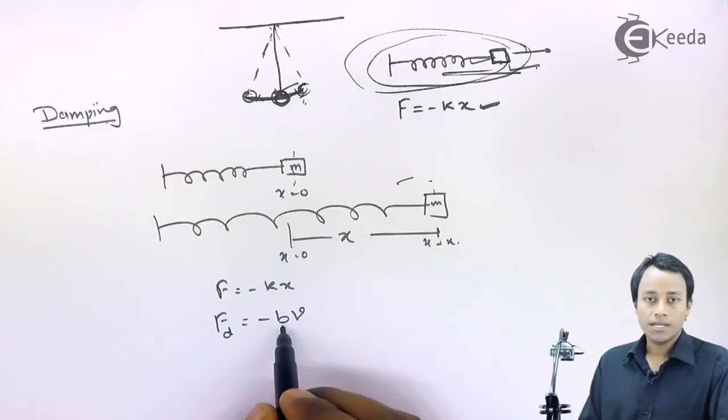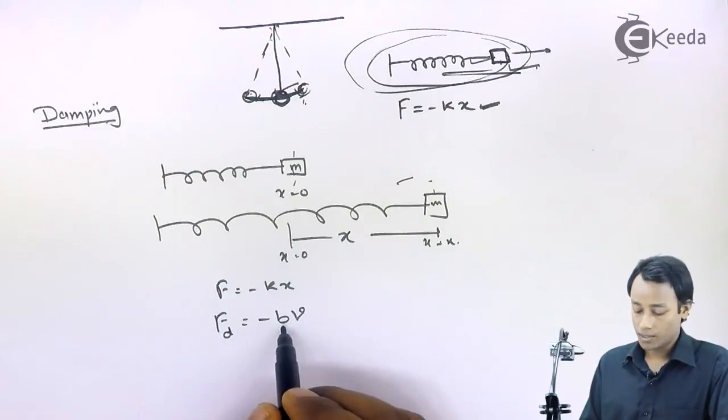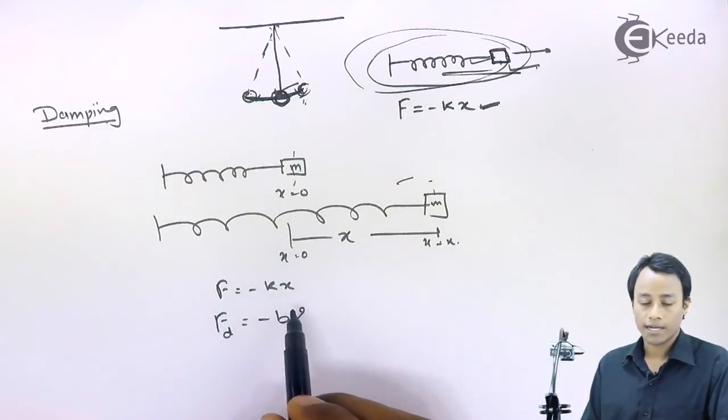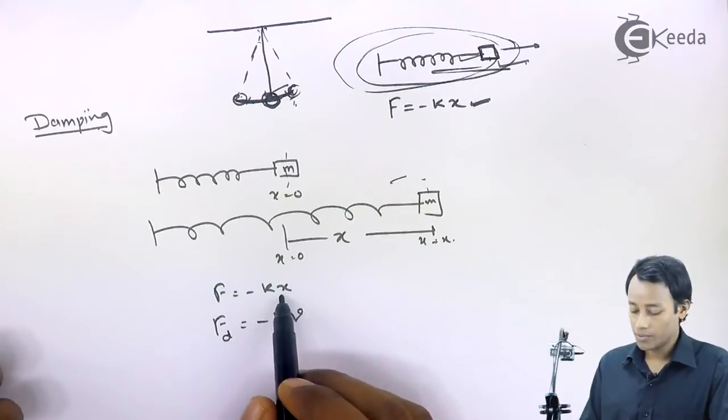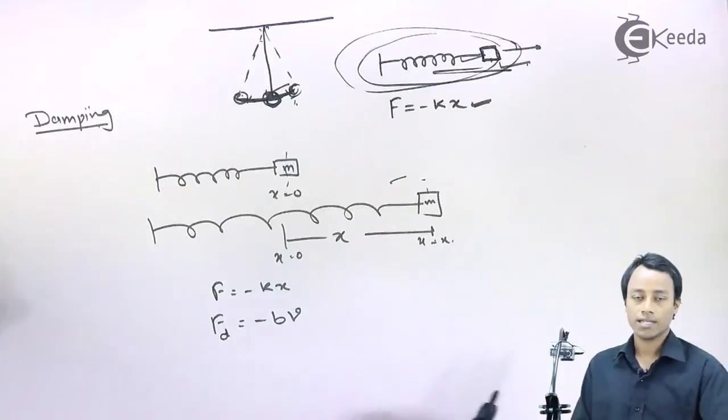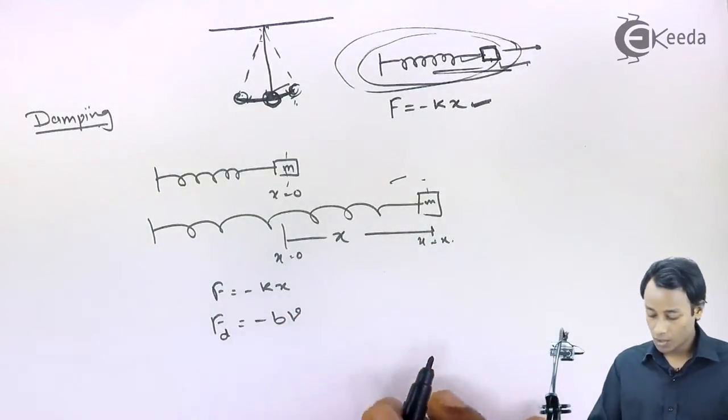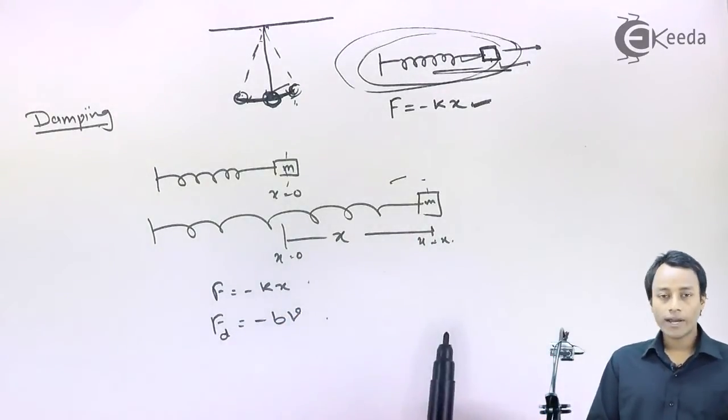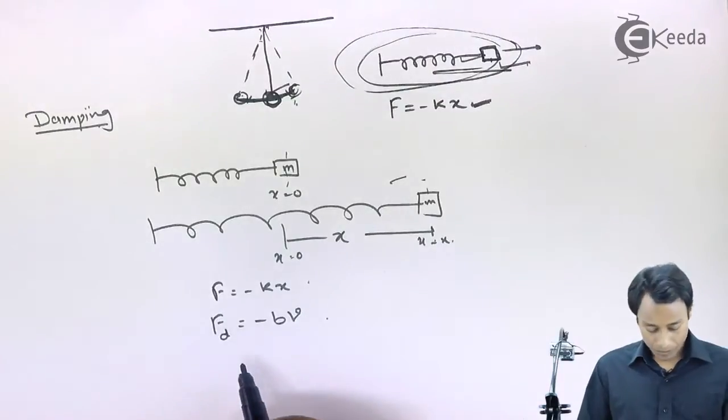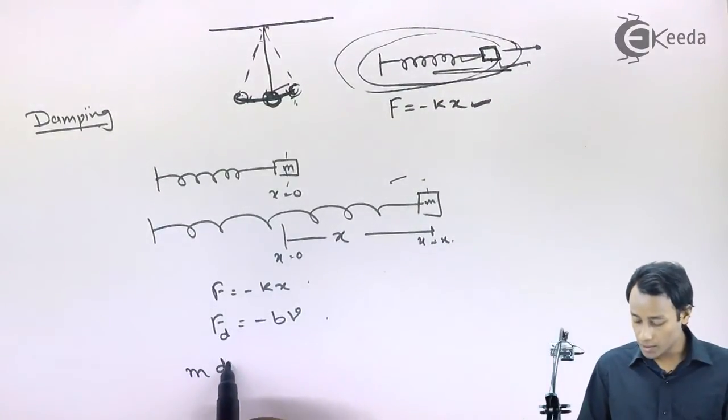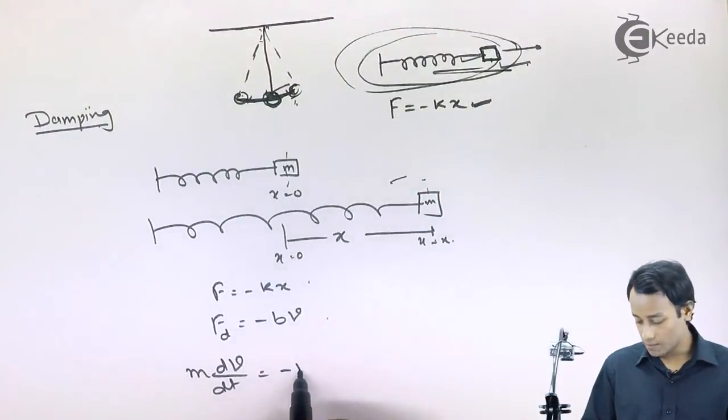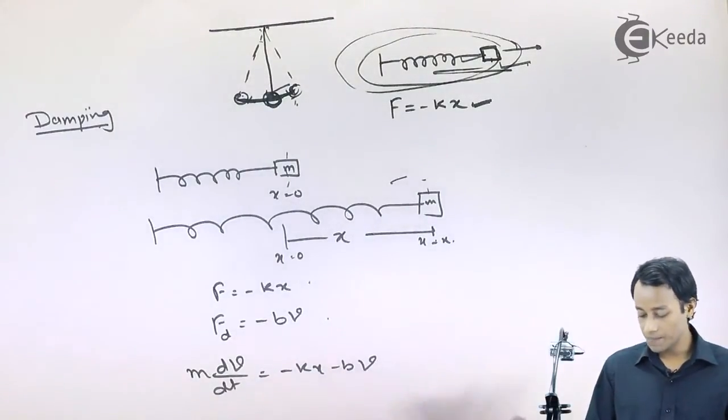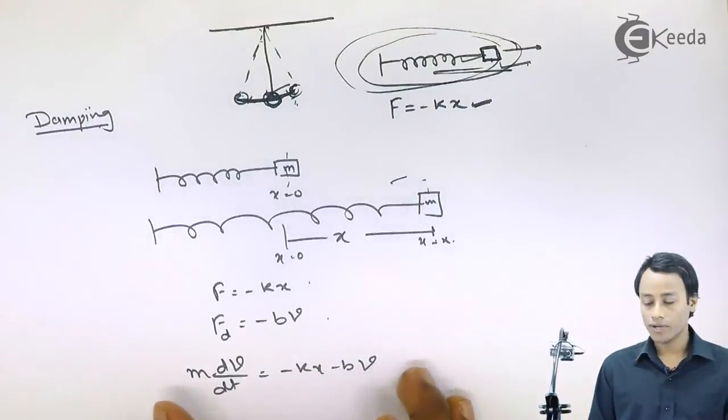This B is damping factor. And k already has been said, that is stiffness factor, or for the case of spring, we can say spring constant. So then considering both these factors, the equation of motion stands out to be this. This is net force. That is minus kx minus Bv.